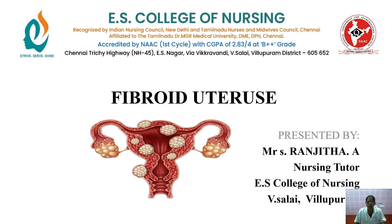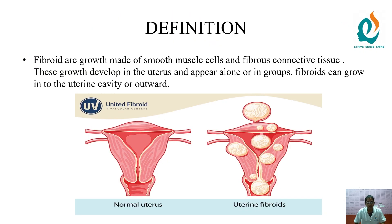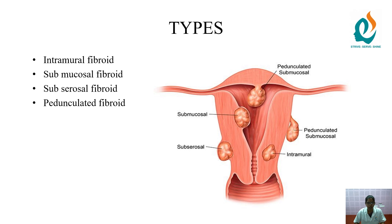Hi, I'm Rajita, nursing tutor in East College of Nursing, Philipram and Vizali. Now we are going to discuss about fibroid uterus. The definition of fibroid uterus — it is the growth of smooth muscles made up of uterine cavity outwards.